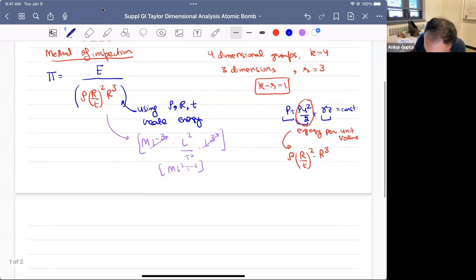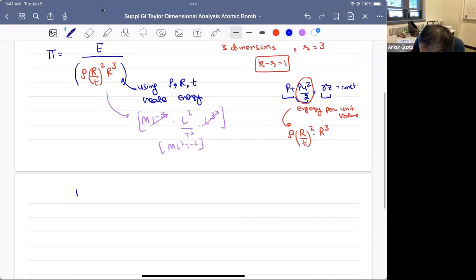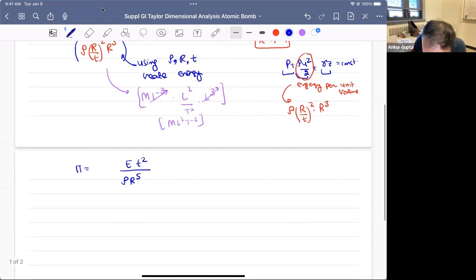This is essentially π. Without doing a lot of math, we can say π is equal to E times ρr⁵t². And this π is now a function of one. There is only one dimensionless group. The point is that this is some constant c₁ which you do not know.